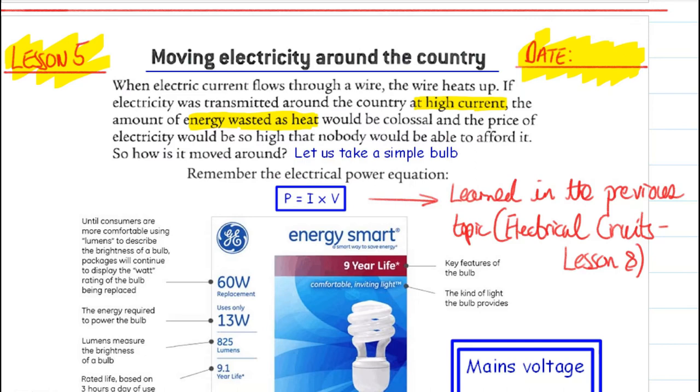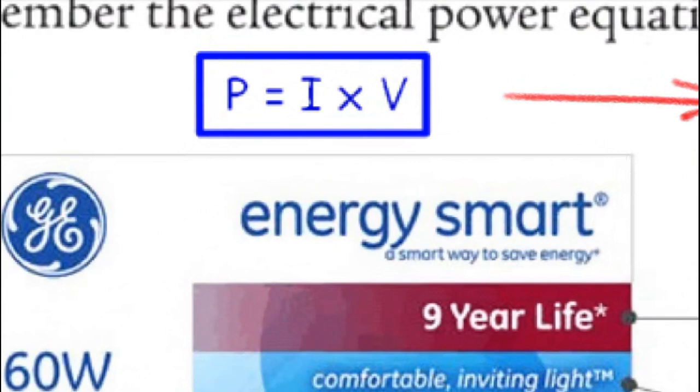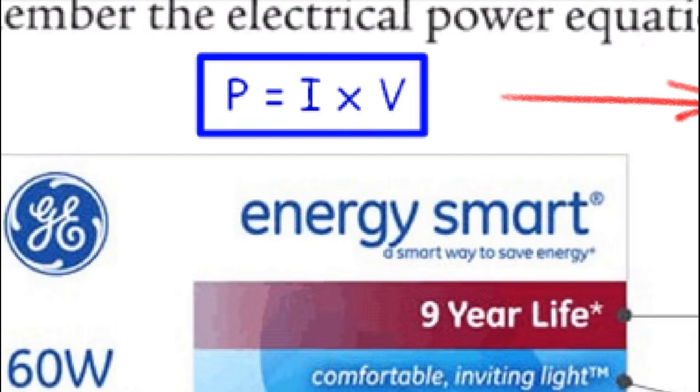So, how do we overcome this problem? Firstly, we're going to look at this equation again. Something we learned in our first topic. Power is current times voltage. Why are we learning about this now when we're talking about moving electricity? Well, what we want is to increase the amount of power. We want the current to be low. So, logically, we want this voltage to be as high as possible.